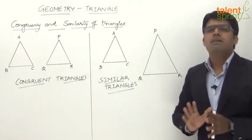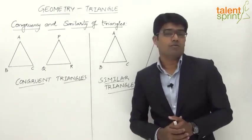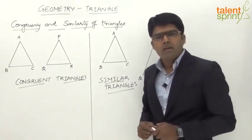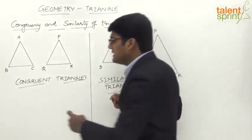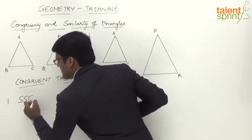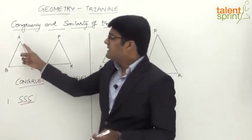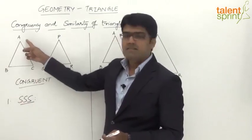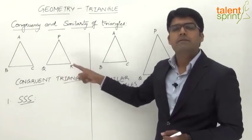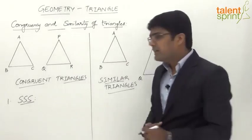Let us now see how to check congruency of two triangles. There are different ways of verifying this. The first is called SSS congruency — Side Side Side congruency — which means if the three sides of the first triangle are equal to the three corresponding sides of the second triangle, then the two triangles are congruent.